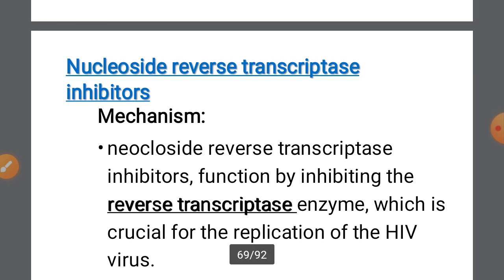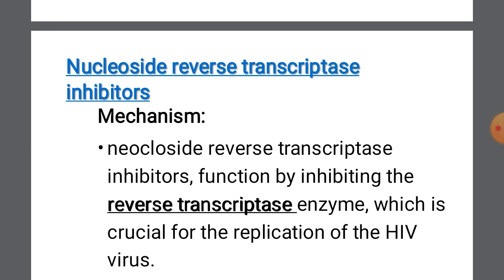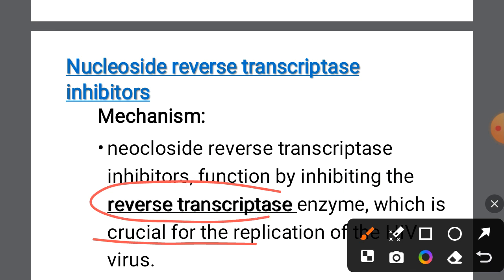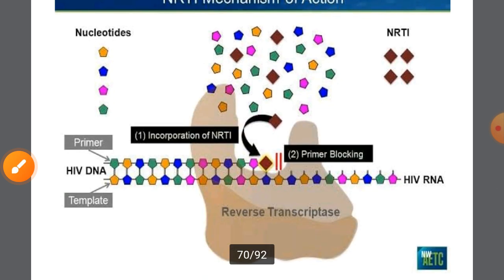The first class is nucleoside reverse transcriptase inhibitors. As the name indicates, they are reverse transcriptase inhibitors. The enzyme reverse transcriptase, which is crucial in HIV replication, is blocked by these drugs.